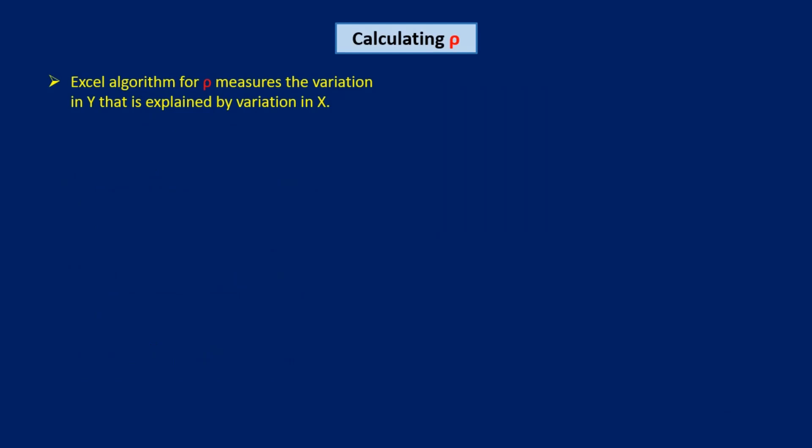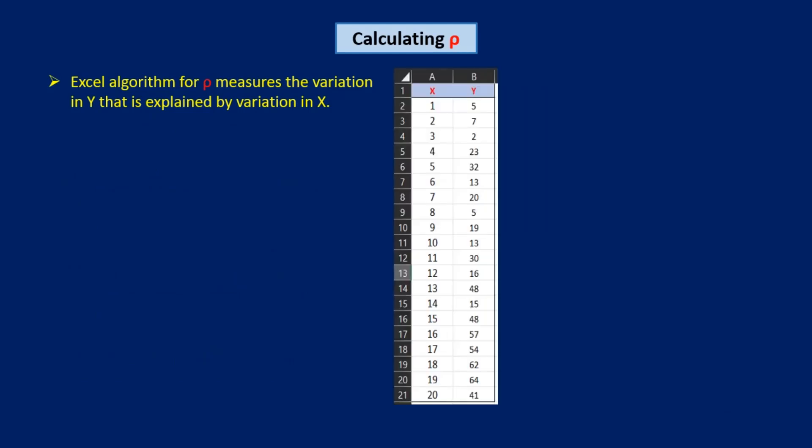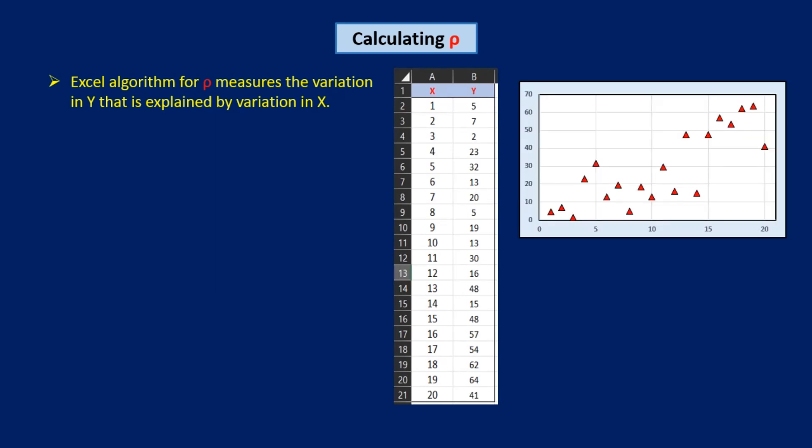There's an algorithm in Excel that calculates rho for any array of x-y pairs. To see how the algorithm works, here's an array of x-y values and a plot of y versus x. Excel's algorithm measures the variation in y by drawing a horizontal line on the plot at the average value of y and summing the squares of the differences between each data point and this line. Why square the differences? Because half of them are positive and half are negative. If you sum them without squaring them, they cancel each other out and the result is 0. But if you square them first, the negative differences become positive, and you can sum them without cancellation. So the sum of these square differences is Excel's measure of the total variation in y, which I will call Tv.